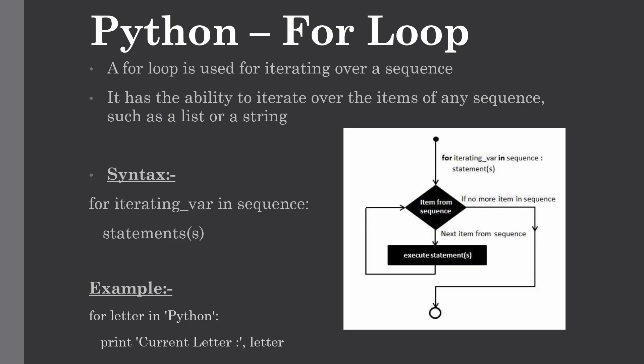With the for loop, we can execute a set of statements once for each item in a list, tuples, etc. As you can see in this flowchart, if a sequence contains an expression list, it is evaluated first. Then the first item in the sequence is assigned to the iterating variable, and the statement block is executed. Each item in the list is assigned to the iterating variable and the statement block is executed until the entire sequence is exhausted.